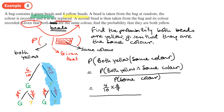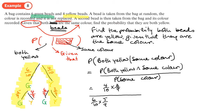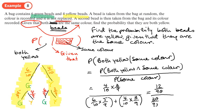The denominator is the probability they're the same color, which comes from two branches: both green is 6 over 10 times 5 over 9, and both yellow is 4 over 10 times 3 over 9. Don't cancel down before adding, because we're adding not multiplying. Working it out: the top is 12 over 90, and the denominator is 30 over 90 plus 12 over 90, giving 42 over 90.